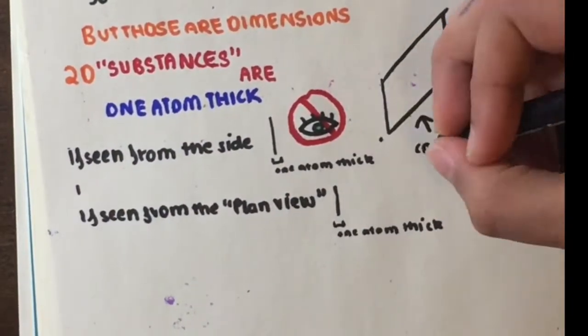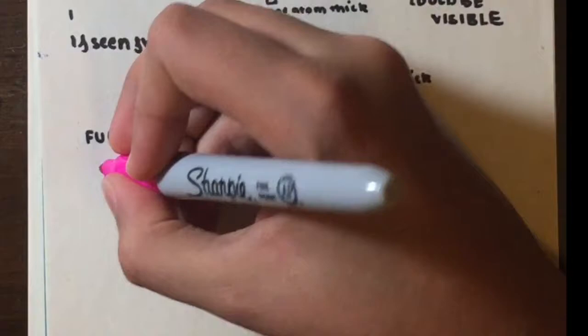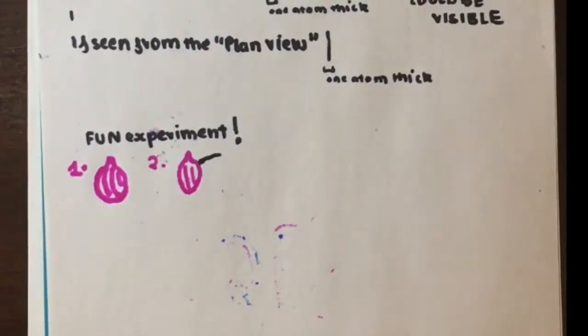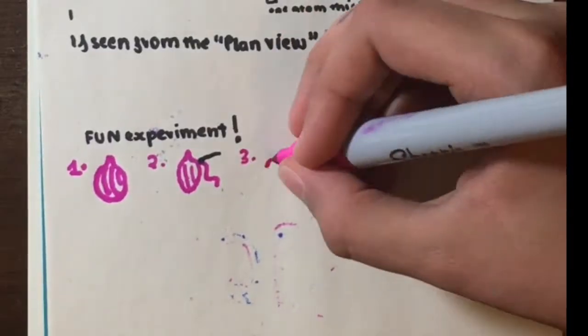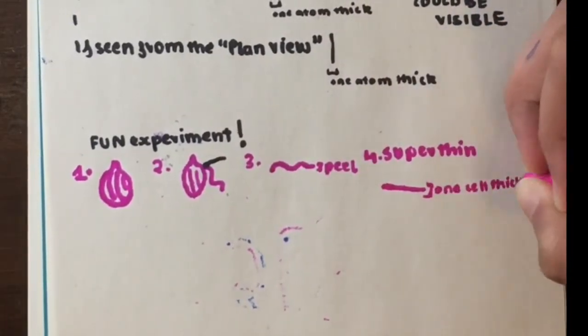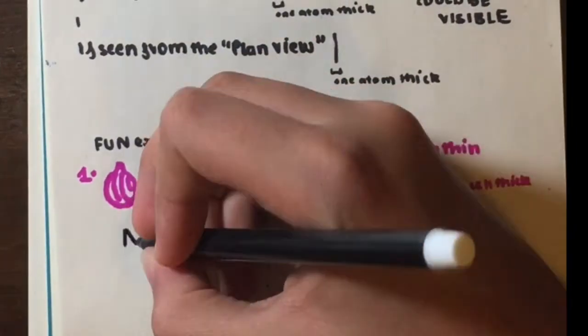Here's an experiment you can do. Take an onion, peel its skin. After that, you will see a thin white layer. Peel that off carefully and now you have a layer called an epidermis, which is one cell thick. It's not 2D, but it's fun to experiment around with anyway.